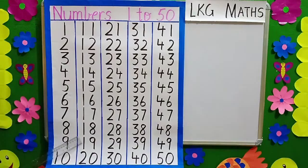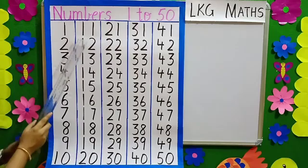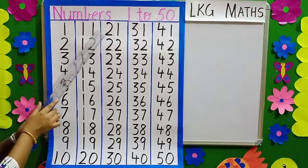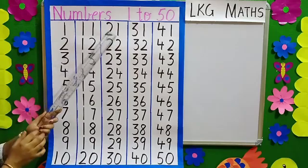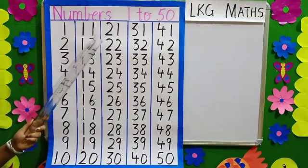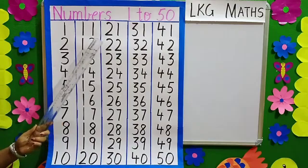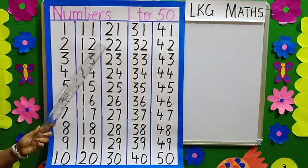What comes after 19? 2, 0 — 20. 2, 1 — 21. 2, 2 — 22.